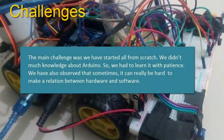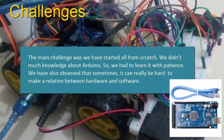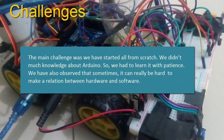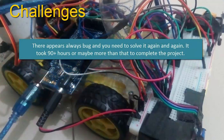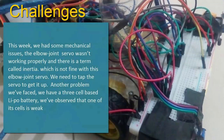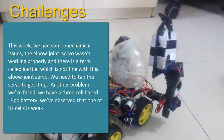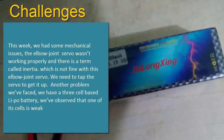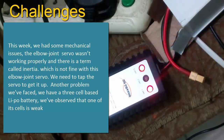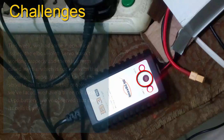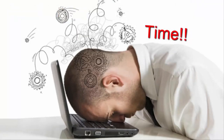Challenges: The main challenge was that we started everything from scratch and didn't have much knowledge about Arduino, so we had to learn it with patience. It can be really hard to make a relation between hardware and software — bugs appear constantly and you need to solve them again and again. It took 90-plus hours to complete the project. Last week we had mechanical issues because the elbow joint servo wasn't working properly due to inertia — we needed to tap the servo to get it moving. We also found that one cell of our 3-cell LiPo battery was weak, so DC motors were not getting enough power. We couldn't solve the mechanical problems of the battery and servo due to lack of time.